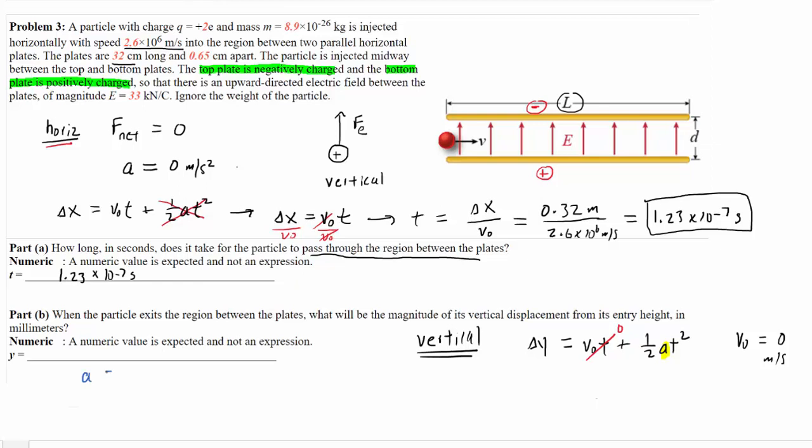Now, we know from Physics 1 that acceleration is equal to the net force acting on an object divided by its mass. We noted earlier that there was a net force acting on that charged particle. It was the electric force. So we can actually put a little subscript E right here to represent the electric force. Now, we know from this chapter that the electric force is simply the product of the charge and the electric field strength.